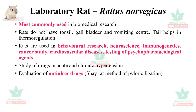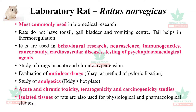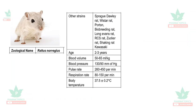Rats are used for evaluation of anti-ulcer drugs by pyloric ligation method, study of analgesics by Eddy's hot plate or other analgesic methods, acute and chronic toxicity studies, teratogenicity and carcinogenicity studies. Isolated tissues like rat ileum can be used for physiological and pharmacological studies. Common strains are Sprague-Dawley, Wistar, Zucker rat, and Kawasaki rat.